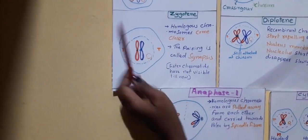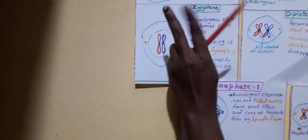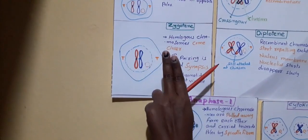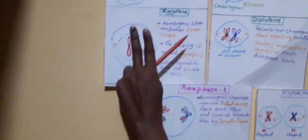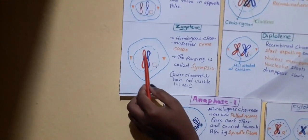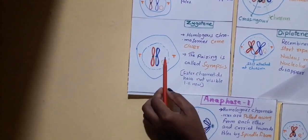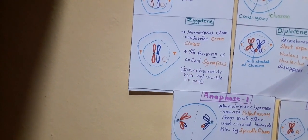Next step is Zygotene. In the Zygotene step, the homologous chromosomes come closer — they come nearer to themselves and form a pair. They will not be in contact but they make a pair. The pairing of these homologous chromosomes is called synapsis. Sister chromatids are not visible till this stage.